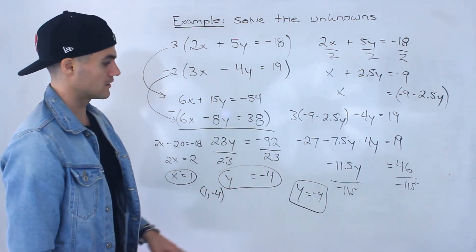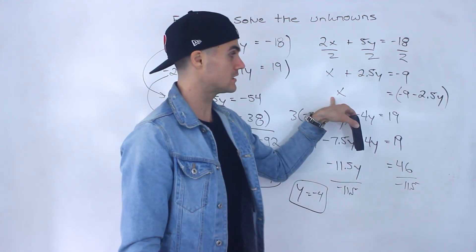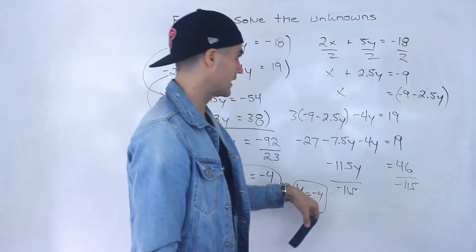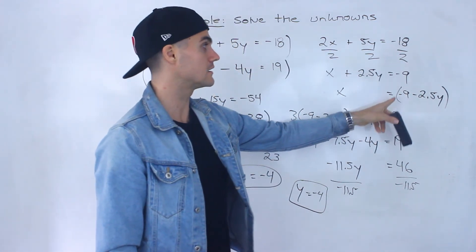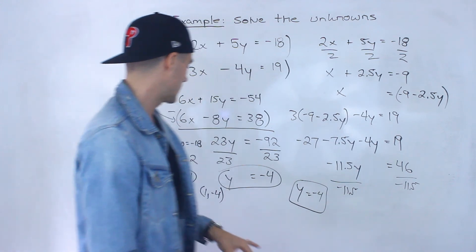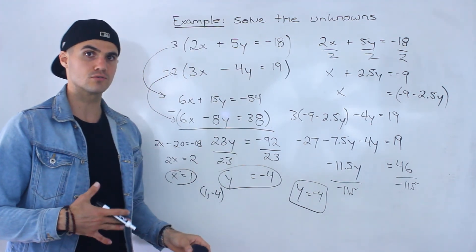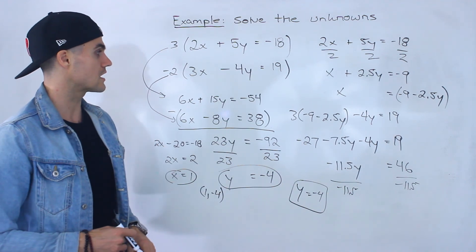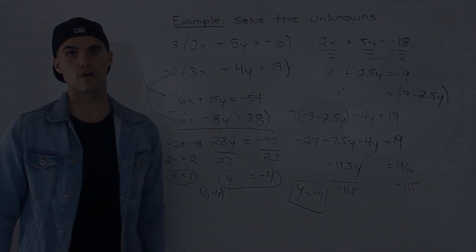All right same value that we got here and then you would take that and you can maybe even plug it in here since the x is isolated here. So if you plugged in negative 4, negative 2.5 times negative 4 is positive 10, negative 9 plus 10 indeed gives us positive 1. All right so different methods you could do to solve this system. Whichever way you do it, 1 and negative 4 are your final answers.